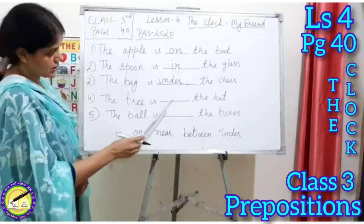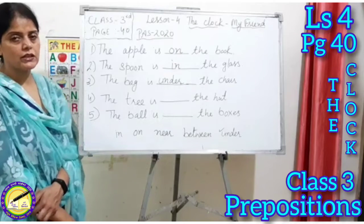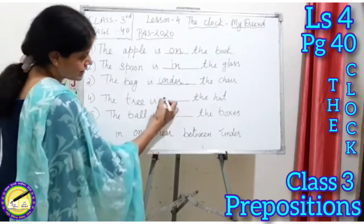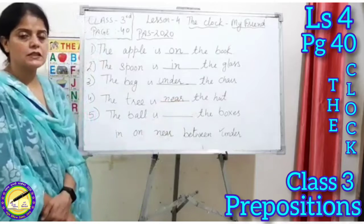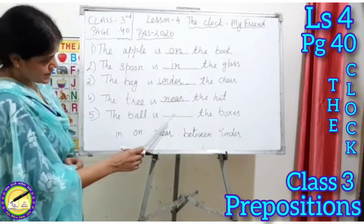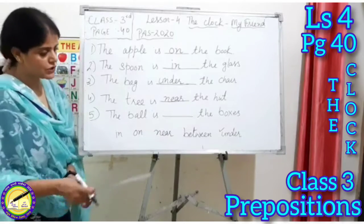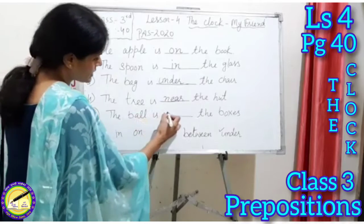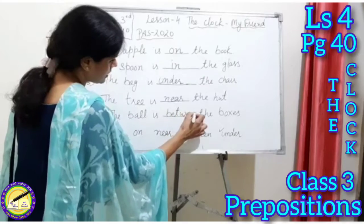The tree is blank the hut. The tree is near the small hut — it is close to it. So we write 'near': the tree is near the hut. The ball is blank the boxes. The ball was between the boxes, in the middle. So we write 'between': the ball is between the boxes.